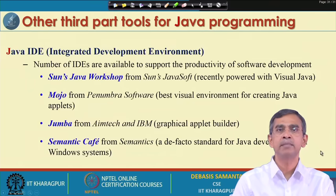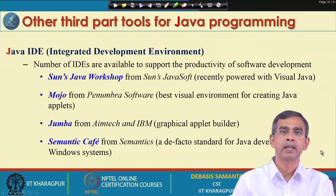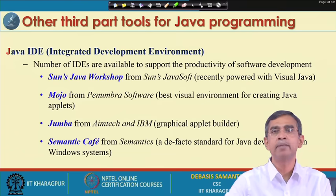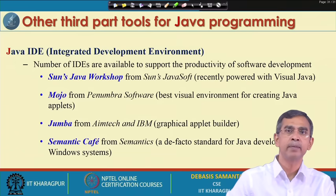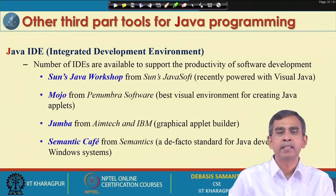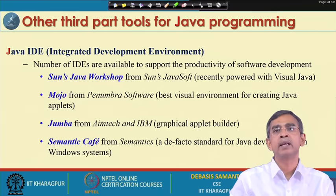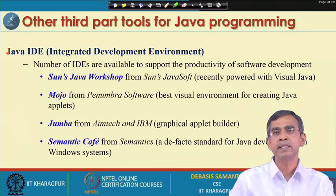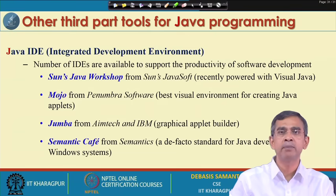These are the different packages available in the Java environment. When you install JDK with all programs we have discussed — javac, java, javadoc, javah, and all these things — all these APIs will also be installed automatically. JDK basically contains everything.